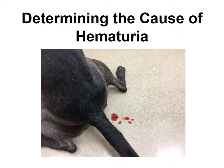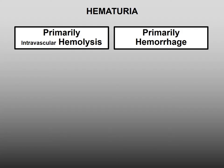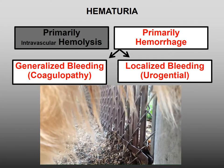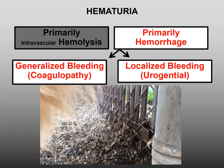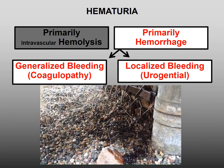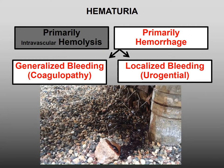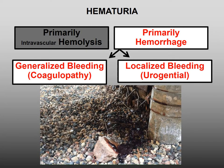The diagnostic evaluation of dogs with hematuria begins with determining if it is primarily hemolysis or primarily hemorrhage. If it's hemorrhage, you need to determine if it's a generalized coagulopathy or local bleeding. The clue to making this diagnosis was watching our dog urinate. We determined it was hemorrhage, local bleeding, and coming from the kidney.